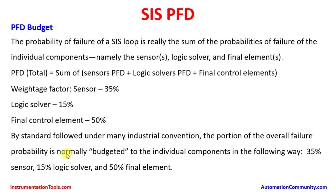By the standard followed under many industrial conventions, the portion of the overall failure probability is normally budgeted to the individual components as follows: 35 percent for the sensor, 15 percent for the logic solver, and 50 percent for the final element. This distribution differs because of the wear and tear of the components and the impact on the probability of failure on demand. This is a general industrial standard used across industries.